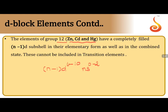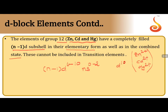Whether zinc, cadmium, and mercury are in elementary form or combined form (e.g., Zn²⁺, Cd²⁺, Hg²⁺), they always have a completely filled d-configuration. This makes them only d-block elements, but they are not considered transition elements. That is a very important distinction.